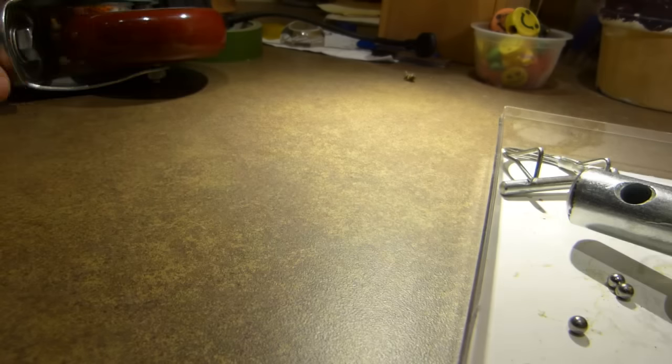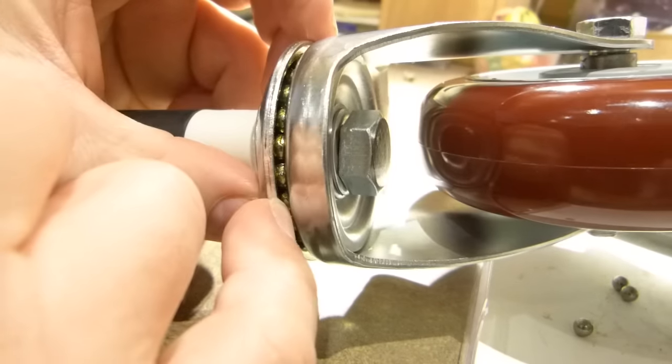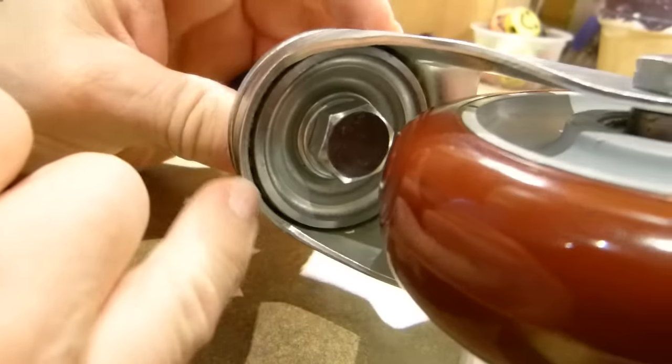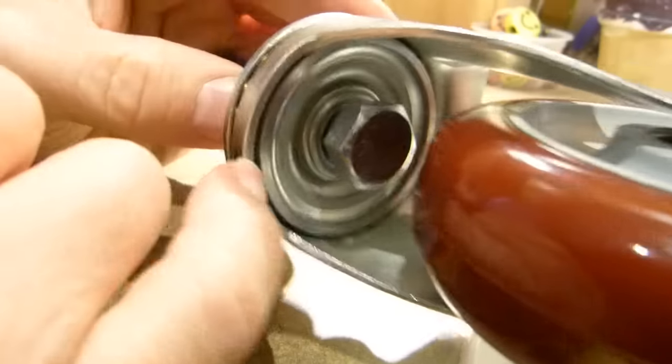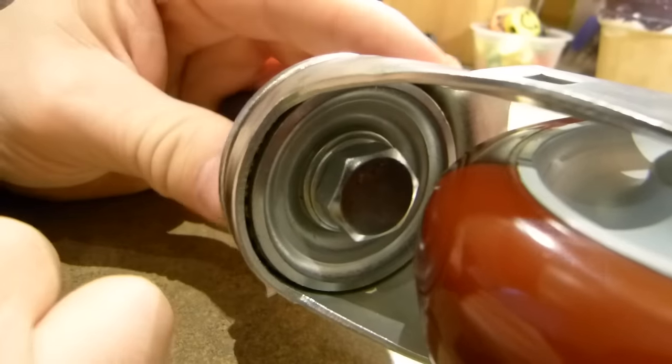On a caster that's intact, you can see how these look. There's the upper set of bearing balls, and inside there, there's the lower set of bearing balls. There, you can see them. So, that's the intact one.